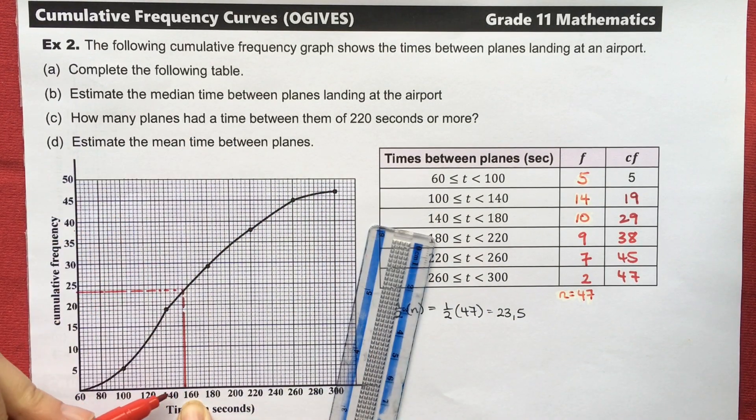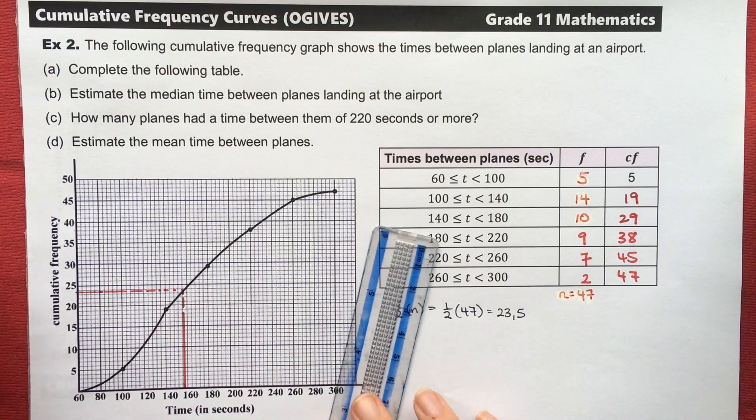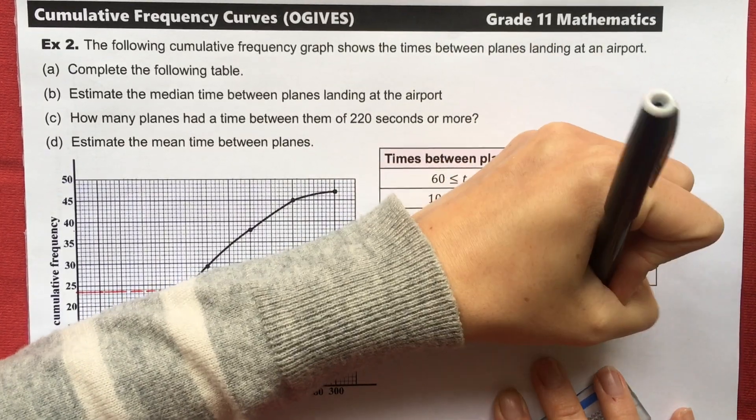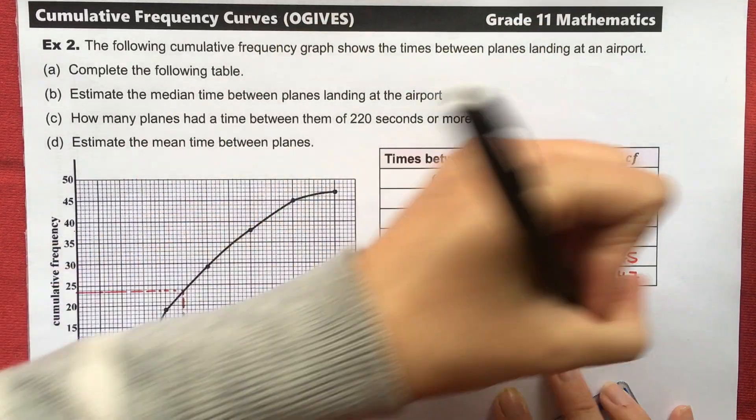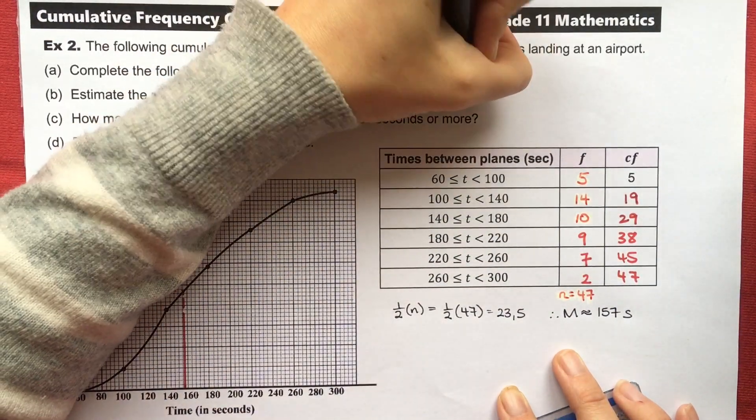And drawing down from the curve, I can see that I'm roughly, let's see, I think we're counting by 4s here. 144, 148, 152, 156. Let's call it 157. So let's say our median is approximately equal to 157 seconds.